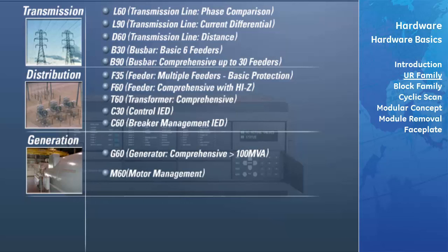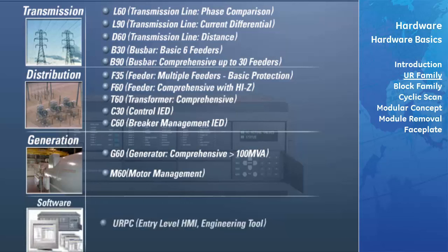The Universal Relay System software is UR PC, a Windows-based program that may be run on any PC with the Windows 95, 98, or NT operating systems.